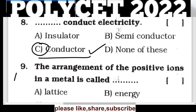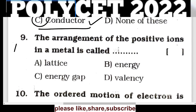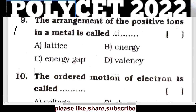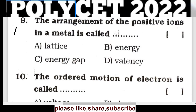Question 9: The arrangement of positive ions in a metal is called — option A: lattice; option B: energy; option C: energy gap; option D: valency. The correct answer is option A — lattice.